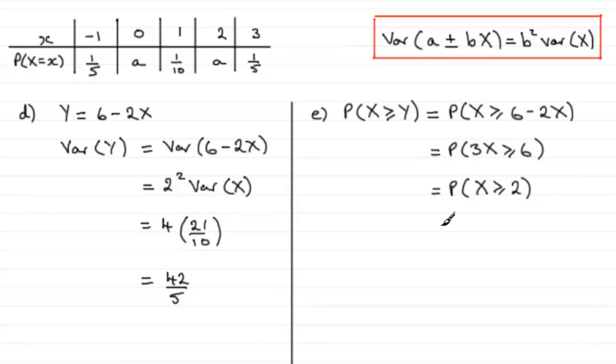And what is the probability of X being greater than or equal to 2? Well clearly it's the probability that X equals 2 plus the probability that X equals 3.